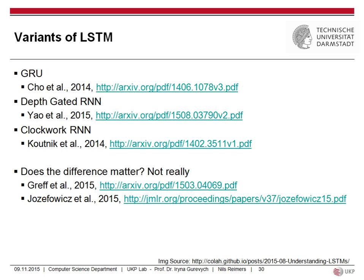In the literature you will see different variants of gated networks: GRU (Gated Recurrent Units), gated RNN, and clockwork RNN, which change the way these gated networks work. The question is: does the difference matter? According to two papers that tested more than 5,000 different network designs of gated networks, the difference is not so big. Using an existing implementation of LSTM or GRU - both implemented in Keras - is quite fine.